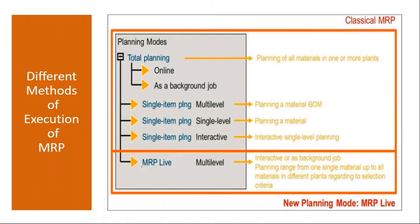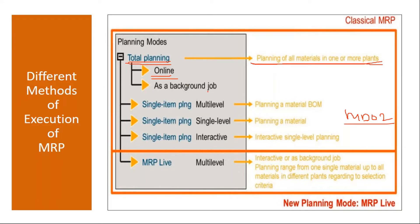MRP can be carried out in various methods. First is total planning — total planning means planning of all materials in one or more plants. Normally I've been showing you transaction MD02 to run MRP for a single material. But in real time, they run MRP at plant level — that is total planning. It can be done online (foreground) or as a background job.